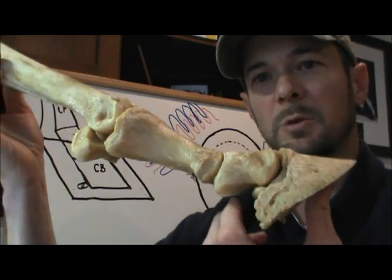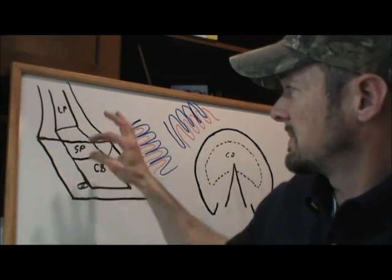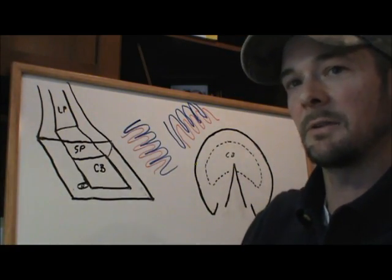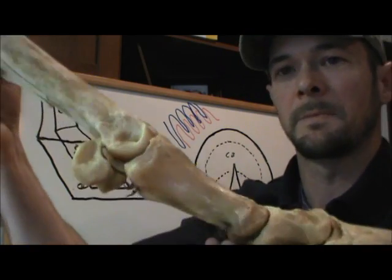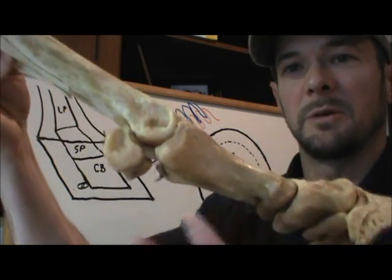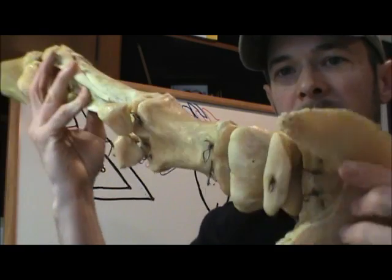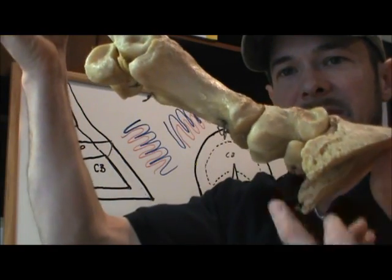Above that is the short pastern bone, so it's about halfway in, halfway out of the hoof capsule itself. Then we have the long pastern bone and above that the fetlock. Sitting behind our coffin bone is the navicular bone.